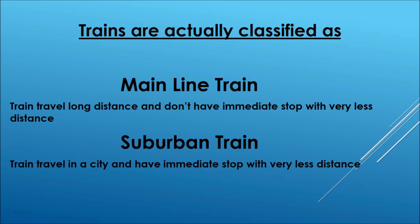Trains are classified into two types: mainline trains and suburban trains. A mainline train travels long distances and does not have frequent stops. For example, when you travel from one state to another, there is at least 50 to 60 km between two stops.